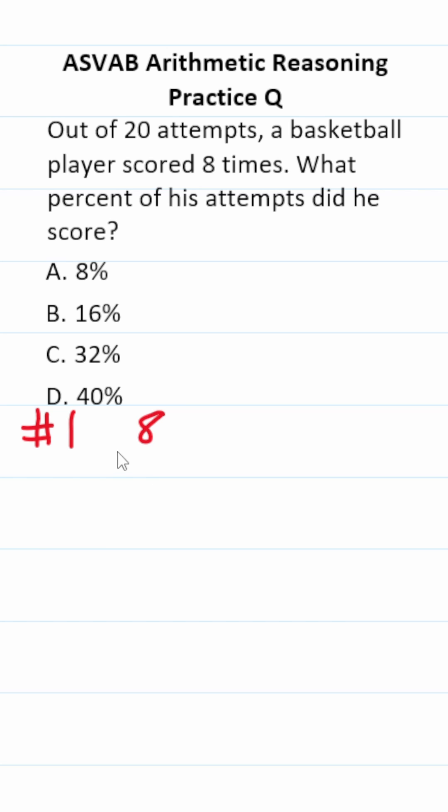Of course, he scored eight out of 20 times. If you wanted to, you could say those have a common factor of two. And when I divide out that common factor of two, this becomes four out of ten. And you should know that four out of ten is 0.4, which is the same thing as 40%.